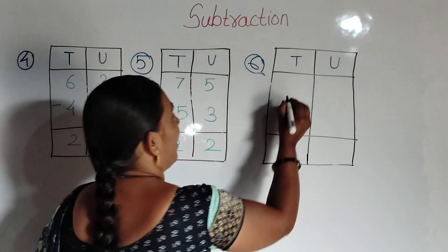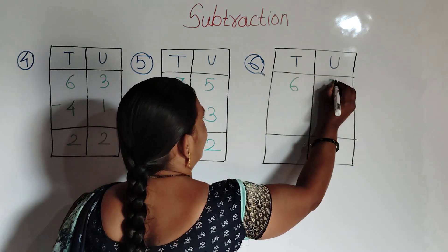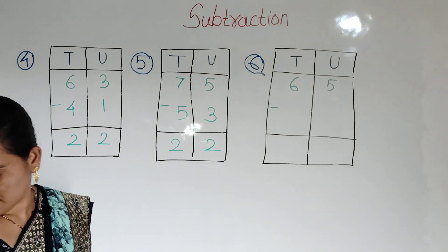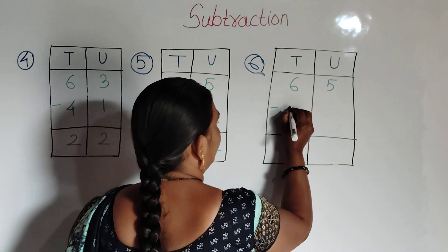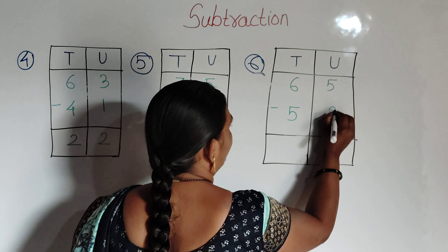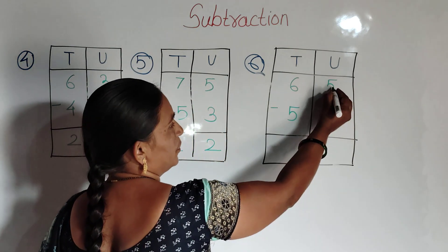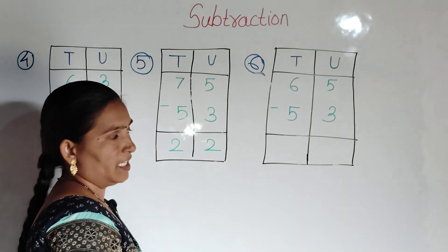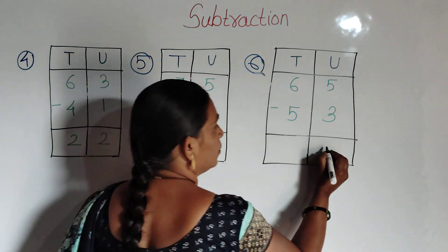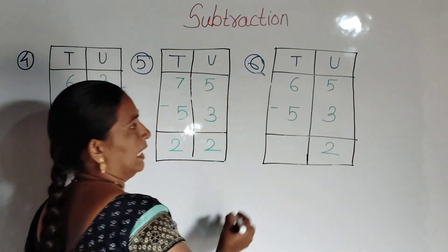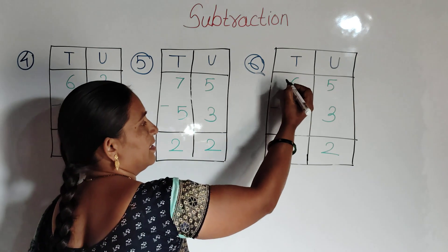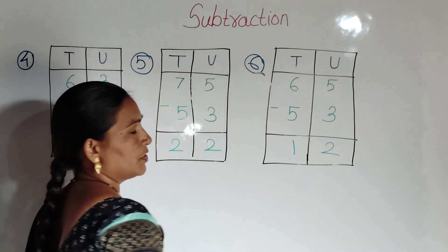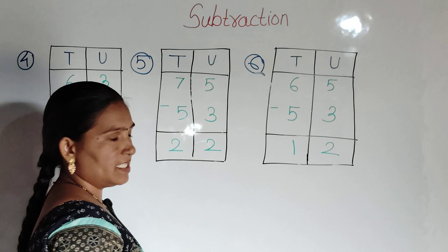65 minus 53. First, units place: 5 minus 3 is equal to 2. Then tens place: 6 minus 5 is equal to 1. So the answer is 12.